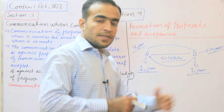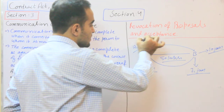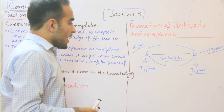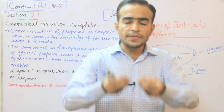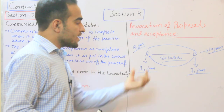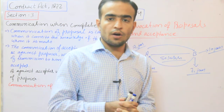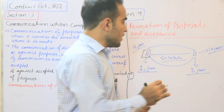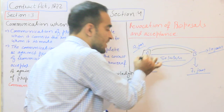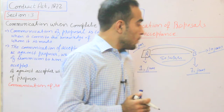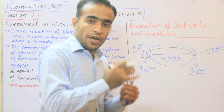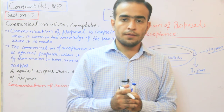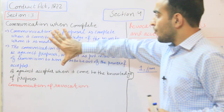B کے خلاف acceptance کب complete ہو جاتا ہے؟ جیسے ہی A وہ acceptance کا letter 17 January کو receive کر لیتا ہے۔ اب فرض کیجئے کہ اگر A اپنا offer revoke کرنا چاہتا ہے تو A telegram کے ذریعے B کو بتائے گا۔ جیسے ہی A نے telegram dispatch کیا، revocation complete ہو جاتا ہے A کے خلاف۔ اور B کے خلاف revocation complete ہوتا ہے جیسے ہی B وہ telegram receive کر لیتا ہے۔